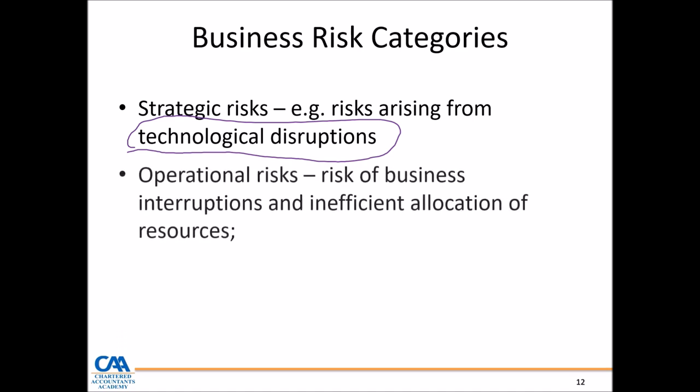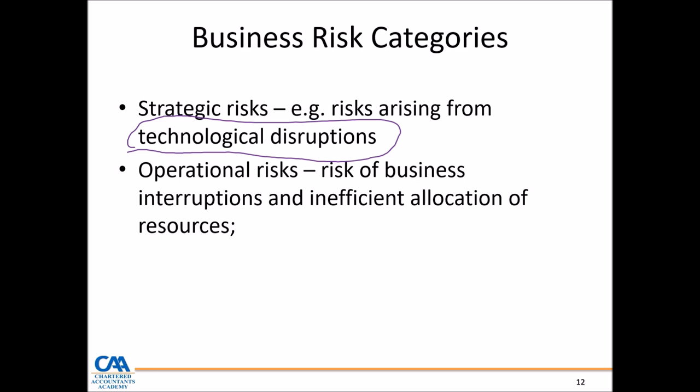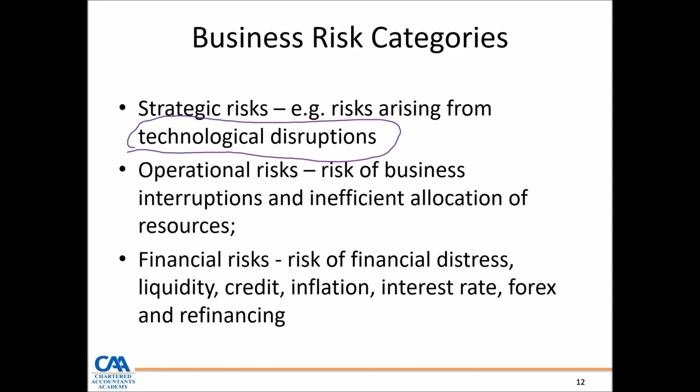Then, operational risks arise from the risk of business interruption or inefficient allocation of resources — just look at the business operations and ask what can go wrong. For a college, an operational risk could be a lecturer failing to pitch up for class, or lecture equipment malfunctioning. Then, financial risk arises from how we finance our business — depending on the form of capital used, it exposes a business to financial risk. If a business is financed with debt, it exposes the business to interest rate risk, as an example.